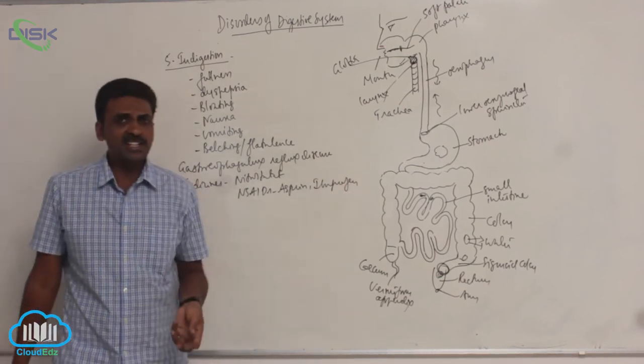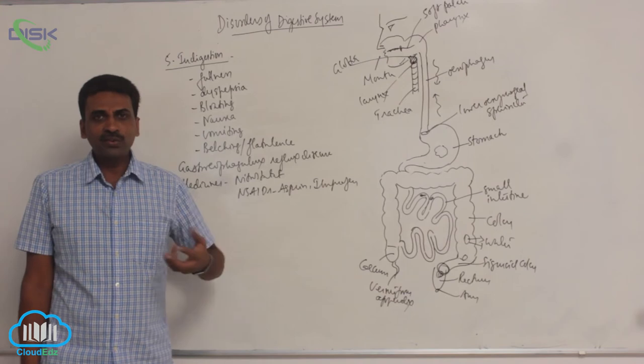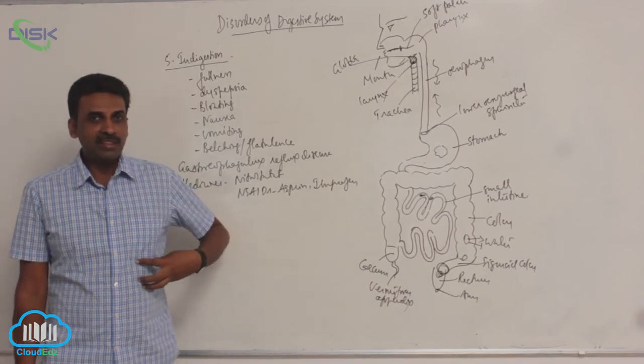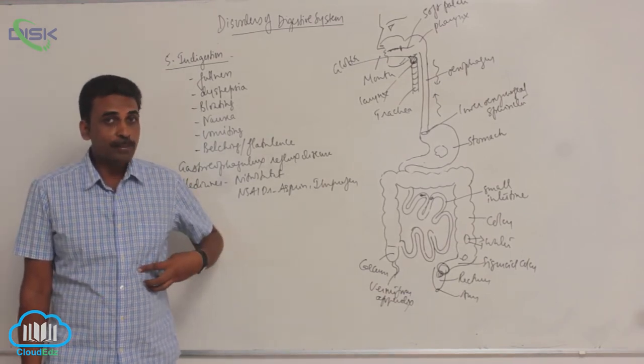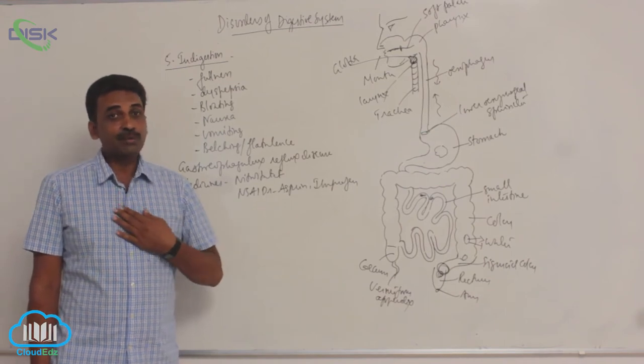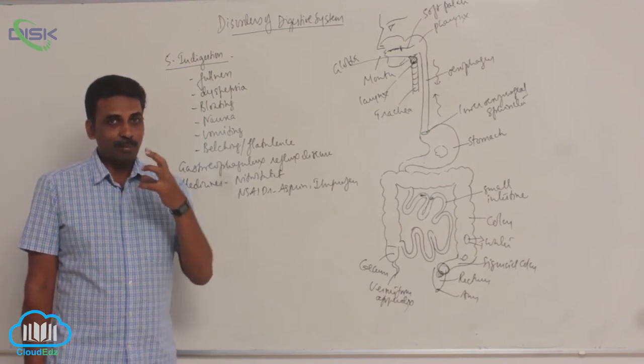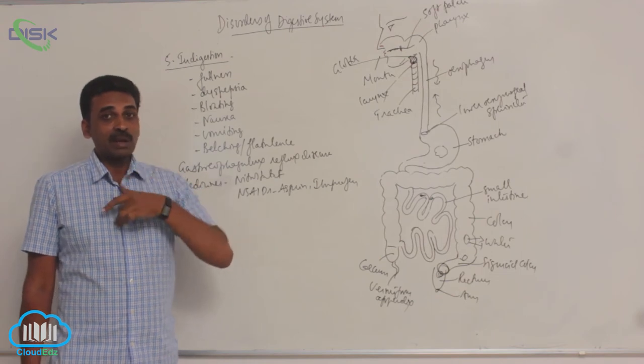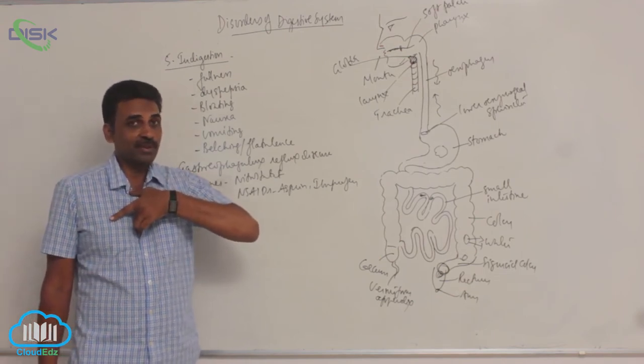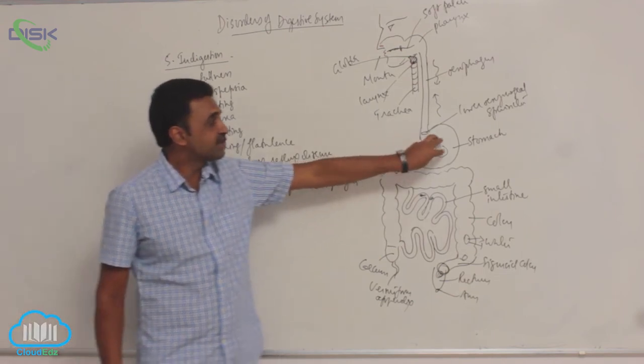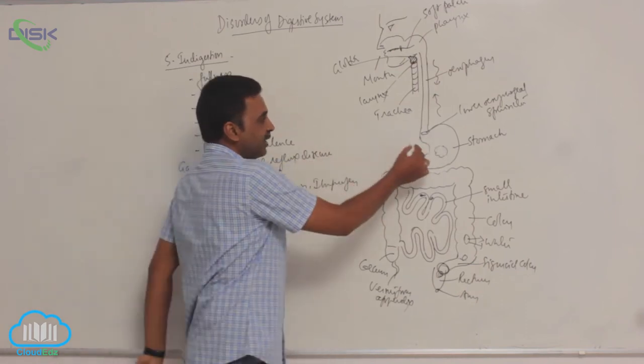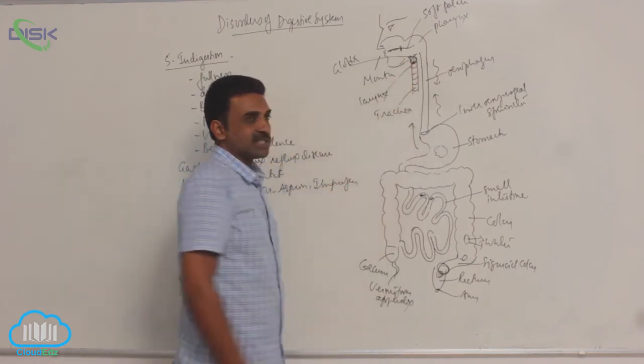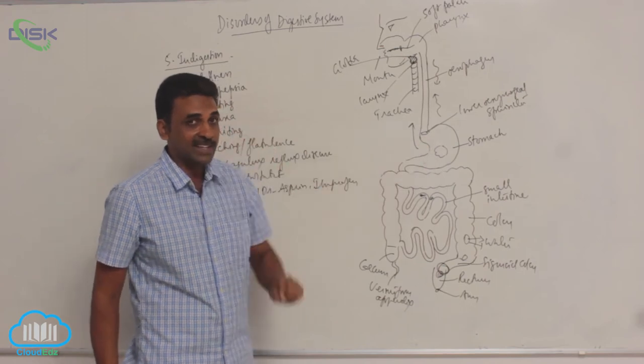Indigestion causes pain or discomfort in the upper abdomen and may also cause heartburn - a burning sensation behind the breastbone or sternum. This occurs because the contents in the stomach go backwards due to the lower esophageal sphincter undergoing relaxation.